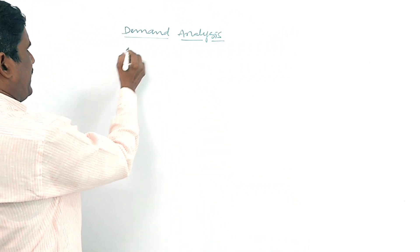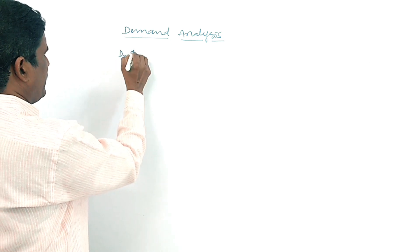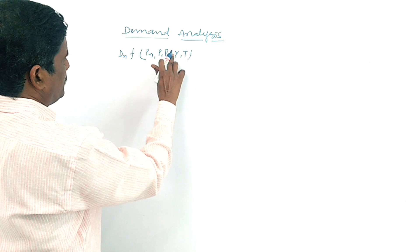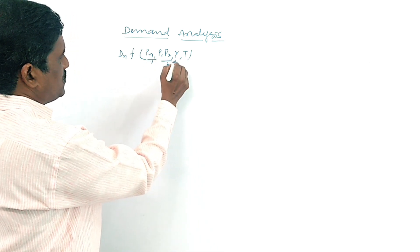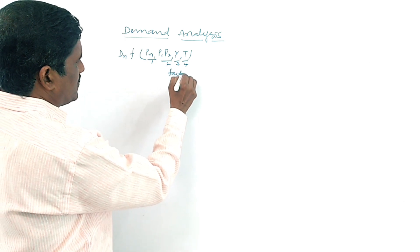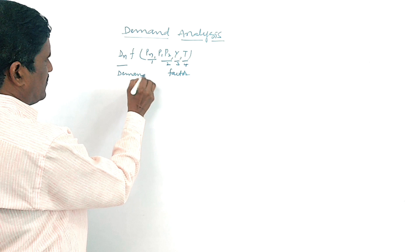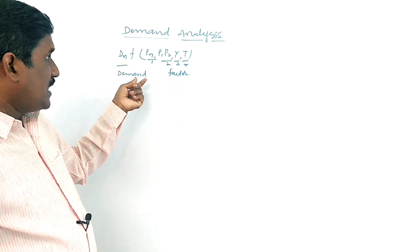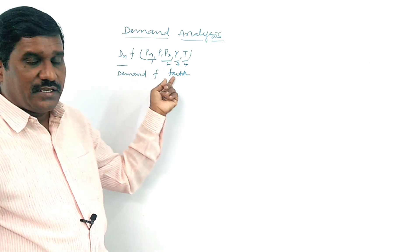Demand — the definition was given in previous videos. The demand function: dn is a function of pn, p1, p2, y, t. P1, p2, y, t — these four are called factors. And dn is called demand. The relationship f indicates the relationship between demand and demand factors — this is called the demand function.